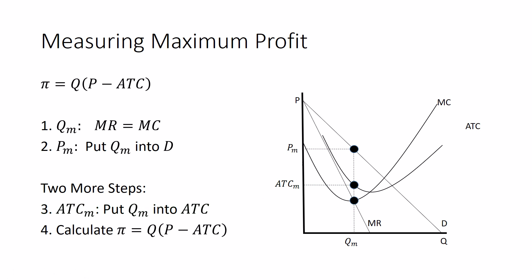Step four is just to calculate profit. We know that profit is quantity times price minus average total cost. And steps one, two, and three gave us all the information we need. Step one, we solve for quantity. Step two, we solve for price. Step three, we solve for average total cost.